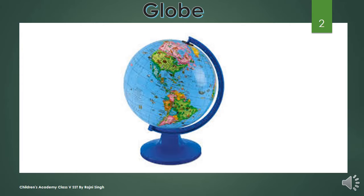To find any place on a globe or a map, we use a system of imaginary lines which run from east to west and north to south. These imaginary lines are known as latitudes and longitudes.